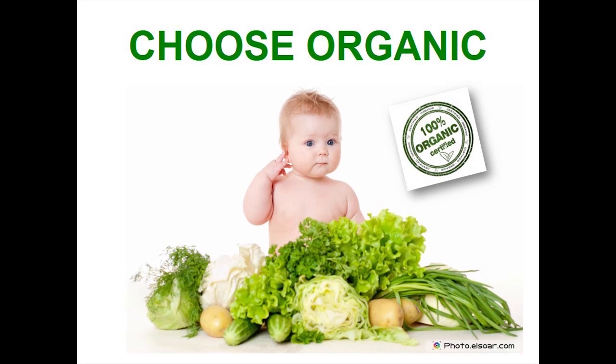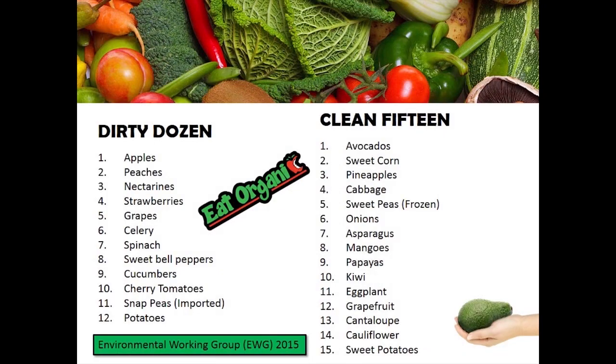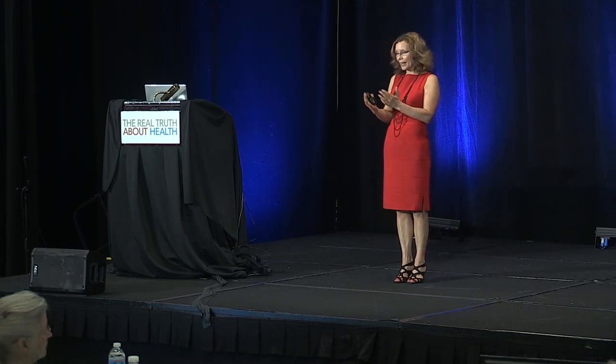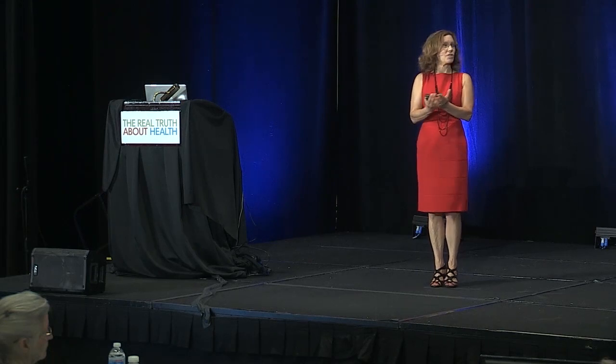To deal with agrochemicals, choose organic when you can, and grow organic in your own gardens. The Environmental Working Group puts out their Dirty Dozen and Clean 15 list every year. For people who can't afford everything organic, it lists the foods least concentrated in pesticides and those most concentrated — the Dirty Dozen — so people can avoid those specifically.